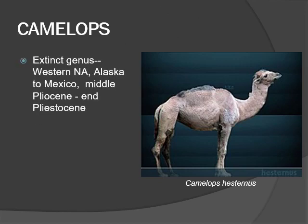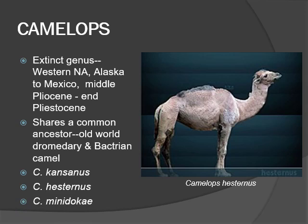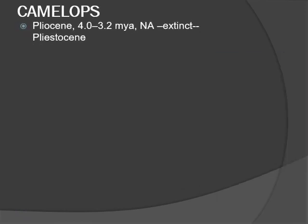Camelopes is an extinct genus that lived in western North America. It ranged from Alaska to Mexico from middle Pliocene to the end of Pleistocene. It shares a common ancestor with the Old World Dromedary and Bactrian camel. Here are three species of Camelopes: Camelopes Kansanus, Husternus, and Minidoka. Camelopes first appeared during middle Pliocene about 4 to 3.2 million years ago in southern North America and became extinct at the end of Pleistocene.